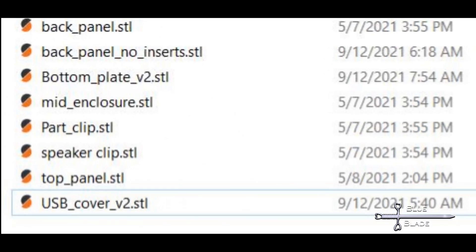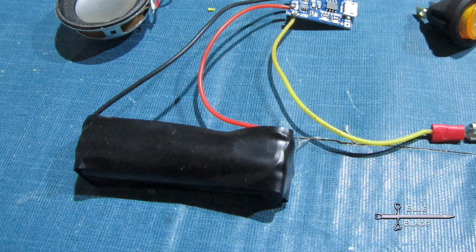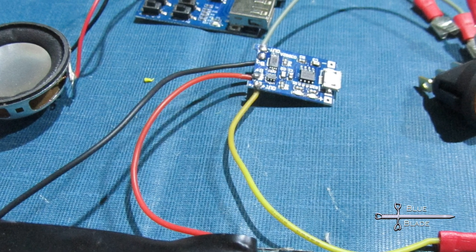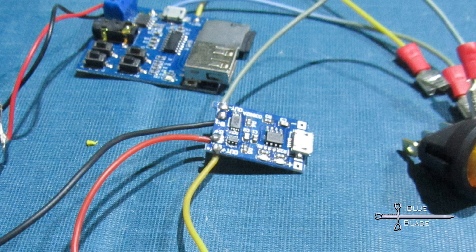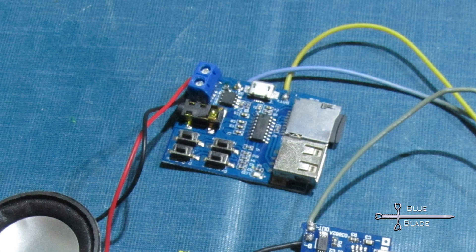All of the STL files are available for free on Thingiverse. Link in the description. For electronics, you'll need an 18650 battery and the TP4056 USB battery charger module. The blue MP3 lossless decoder board and a micro SD card.